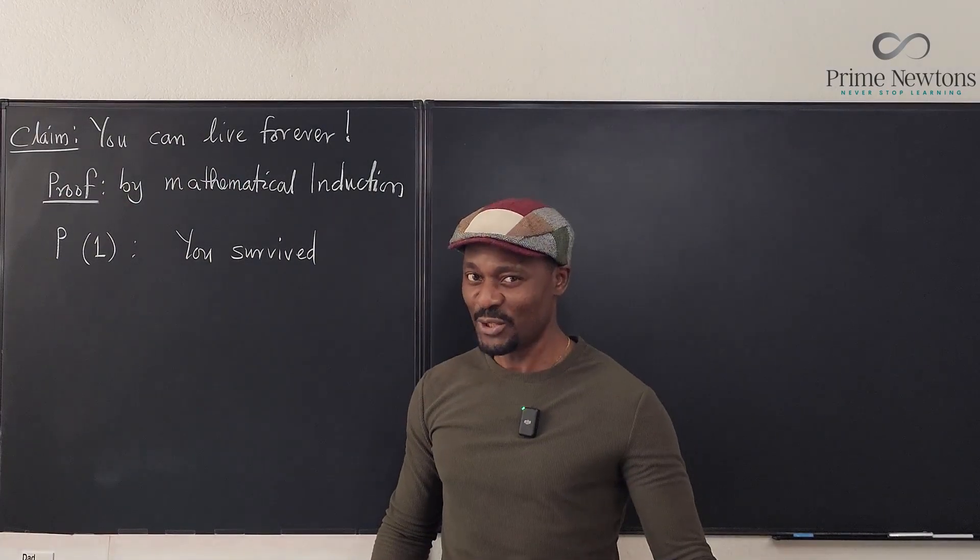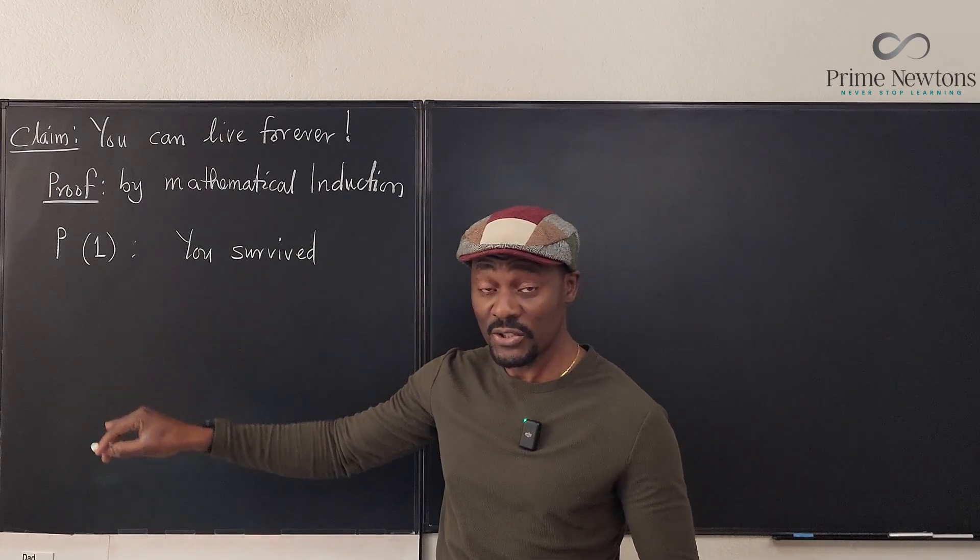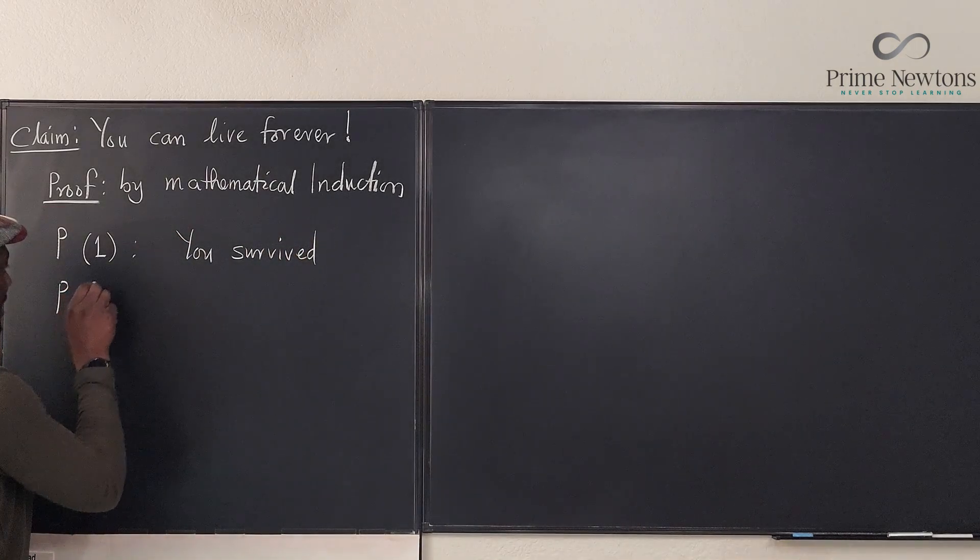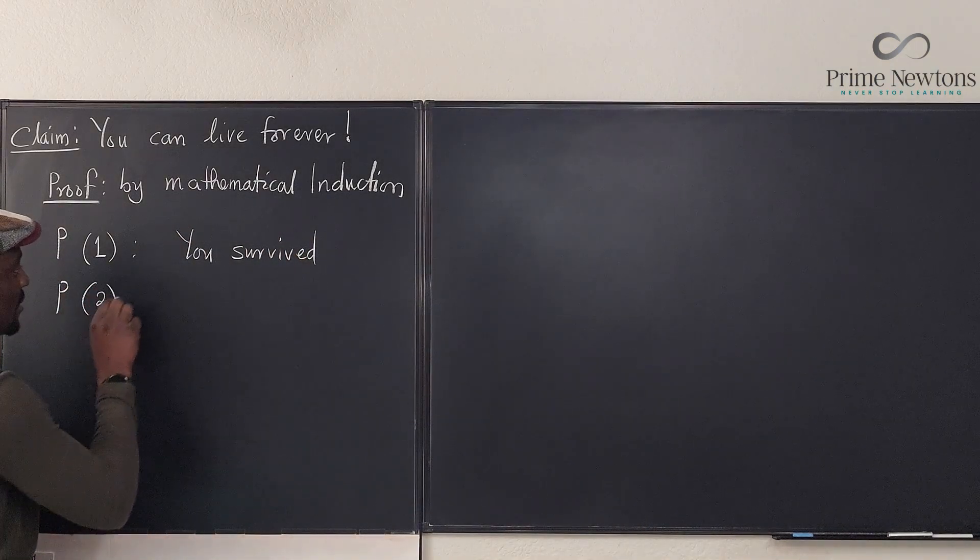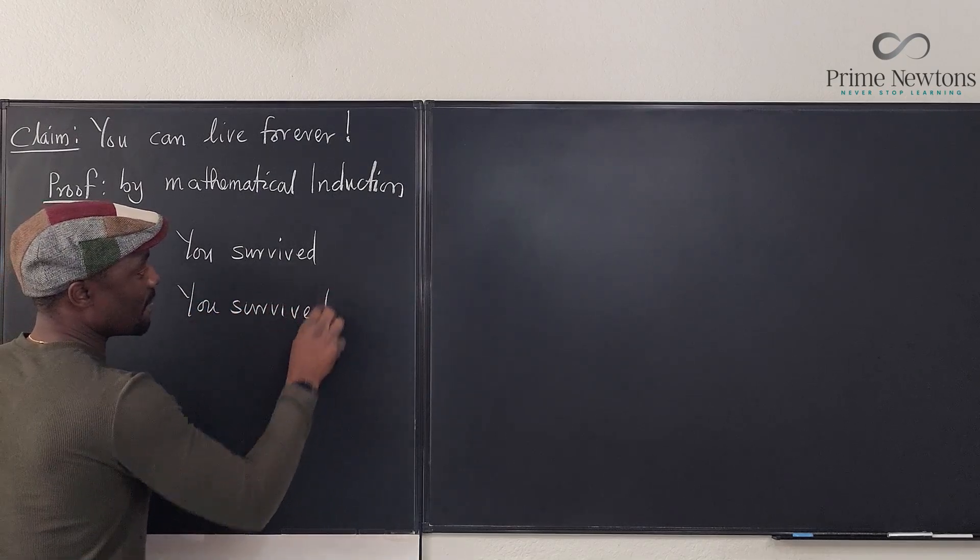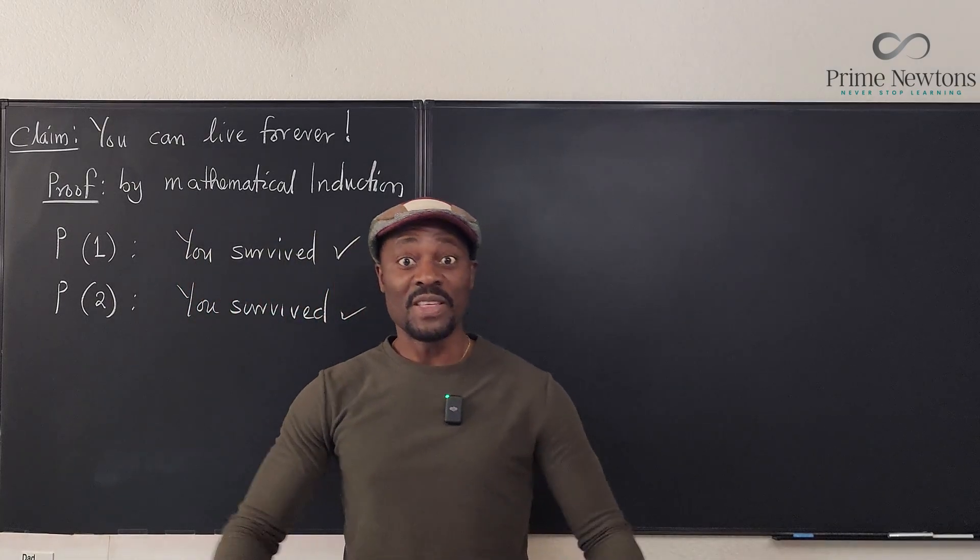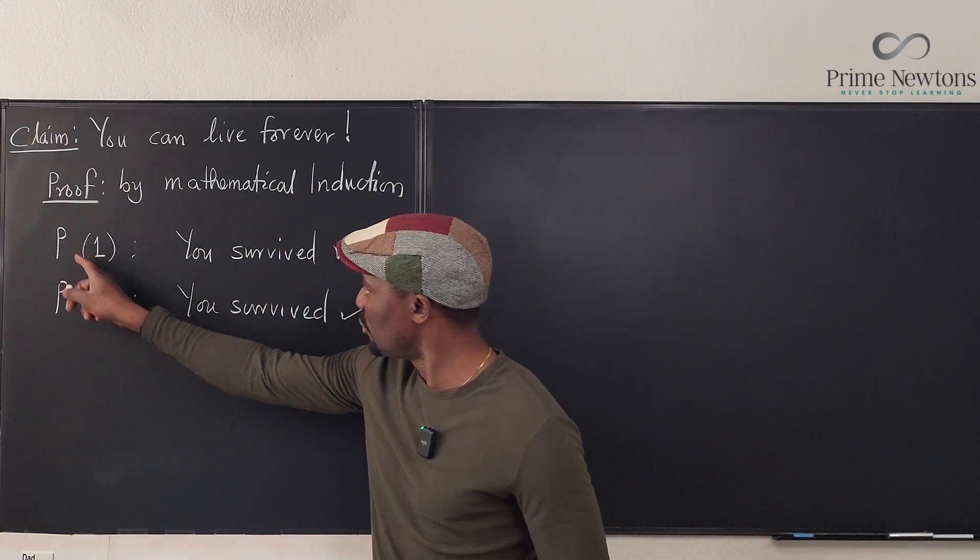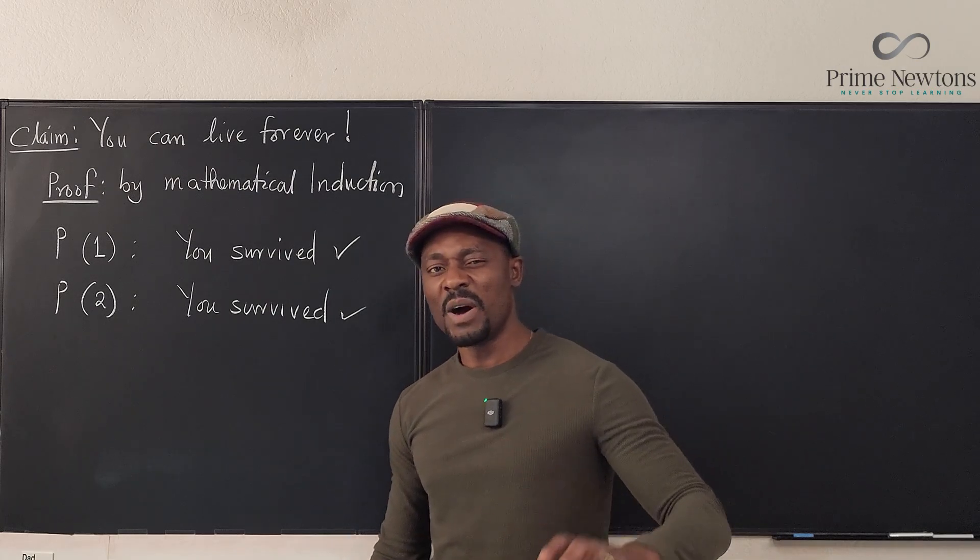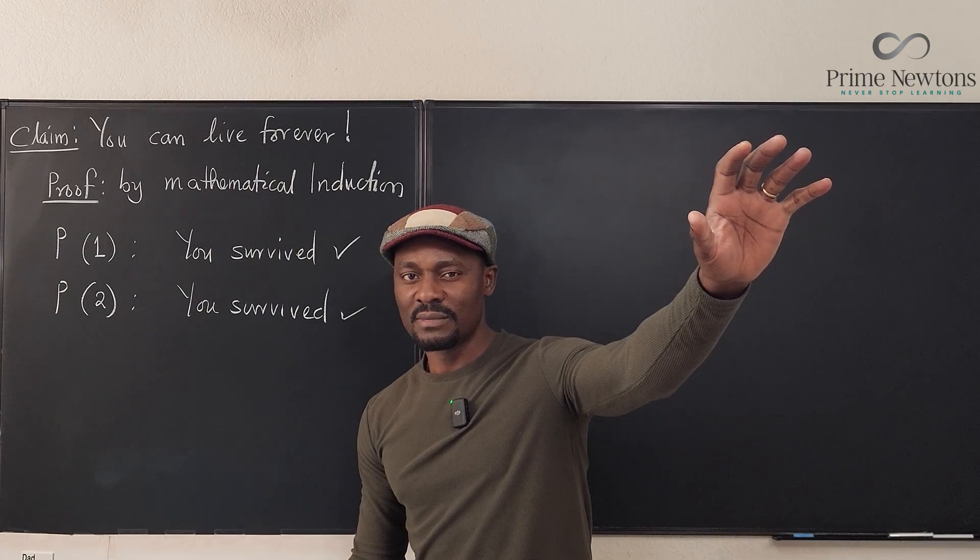Did you survive day two? Obviously. We can also test that just to add to the flavor. So we say that P(2), the proposition for day two, is that you survived. These two statements are true. So what then do we do? After we have tested two days we can keep testing but at some point we're just going to stop and pick a day in the future.